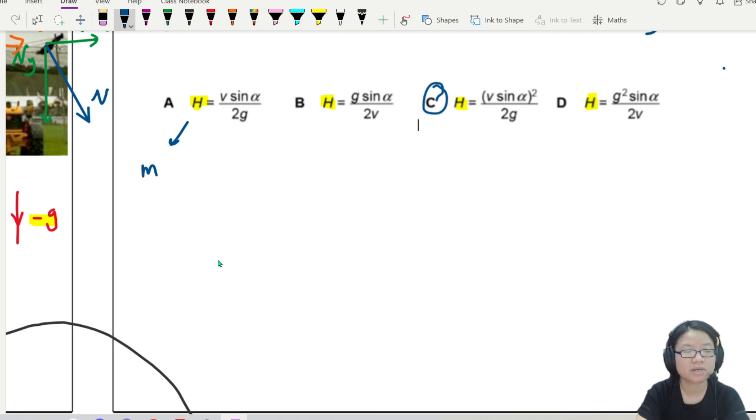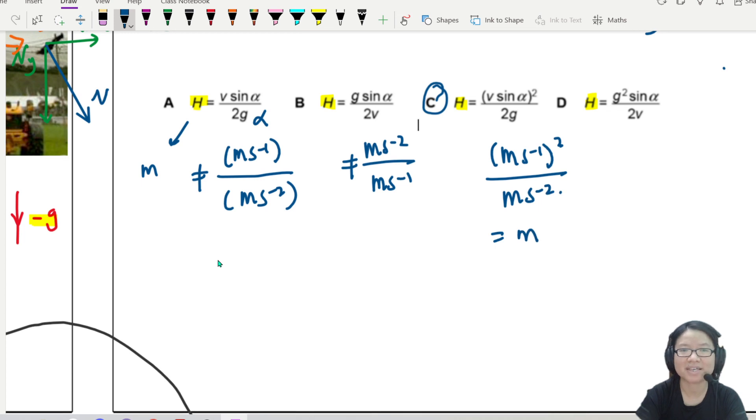So let me test this one first. Sine alpha got no unit. So the unit here will be meter per second, ms⁻¹ divided by ms⁻². Can get m or not? Cannot. Wrong. Option B. Here is ms⁻² divided by v, ms⁻¹. Can get m or not? Not the same. Let's try C. ms⁻¹ but squared divided by ms⁻². This is equal to m. Yes.